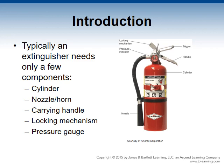Typical extinguishers need only a few components: a cylinder, a discharge nozzle and hose or discharge horn, a discharge trigger, a locking mechanism, a carrying handle, and a pressure gauge. The cylinder holds the suppression agent, which is released when the trigger is activated. The nozzle or horn directs the agent onto the fire. The carrying handle makes it easier to move. The locking mechanism, traditionally a pin inserted into the trigger, prevents accidental discharge. The pressure gauge indicates if there is sufficient pressure to discharge the agent.